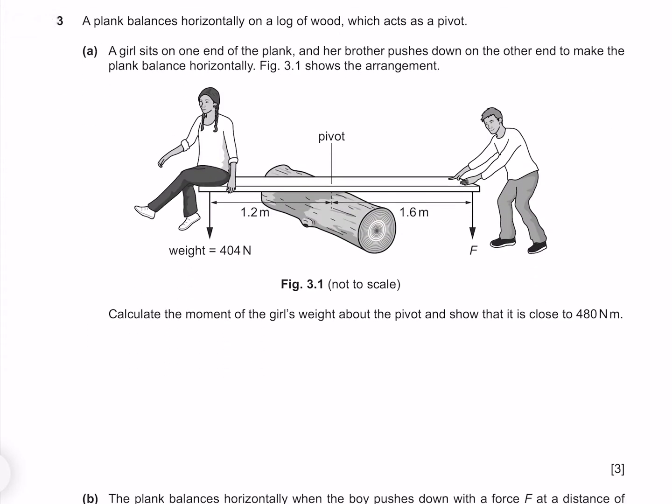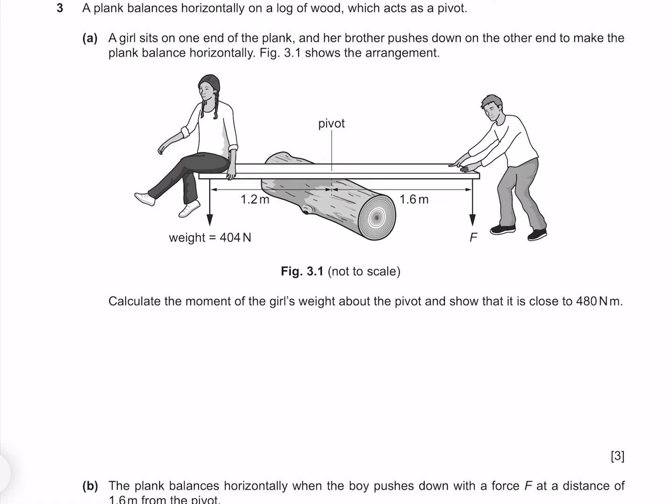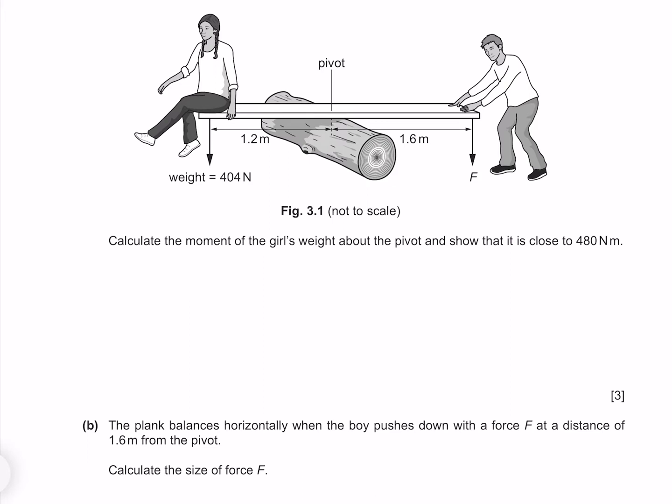A plank balances horizontally on a log of wood which acts as a pivot. A girl sits on one end of the plank, and her brother pushes down on the other end to make the plank balance horizontally. Figure 3.1 shows the arrangement. Calculate the moment of the girl's weight about the pivot and show that it is close to 480 newton metres. The moment of the girl is equal to her weight force multiplied by her distance from the pivot. Her weight is 404 and her distance is 1.2, which gives me 480 newton metres, which is what we're trying to find.